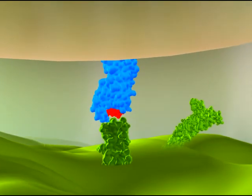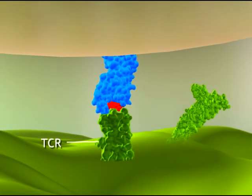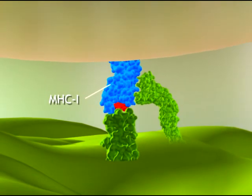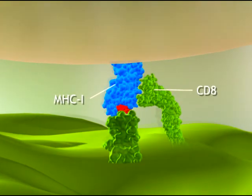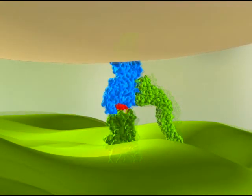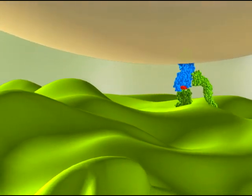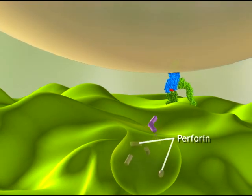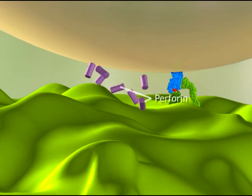The epitope is recognized by the TCR of the cytotoxic T cell, and the MHC1 is recognized by the T cell's CD8 glycoprotein. The cytotoxic T cell then secretes perforin molecules, which form channels in the infected cell's membrane.